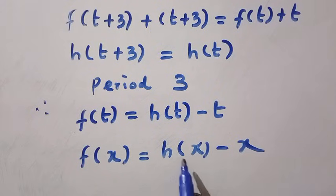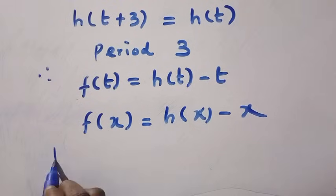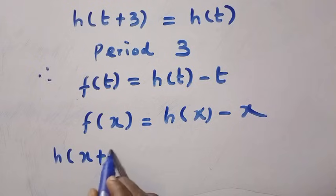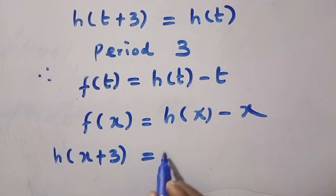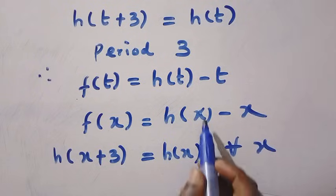which takes any values as we have this h of x plus 3 to be equals h of x. So, for all x. Now, h of x depends on any types of function we have.